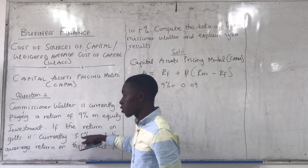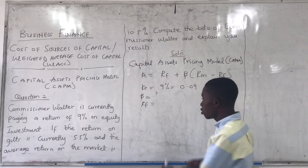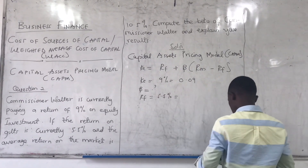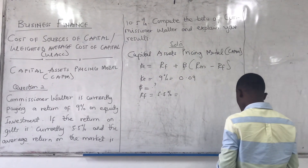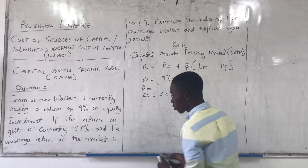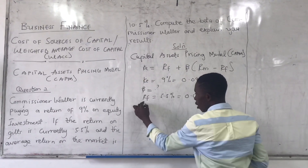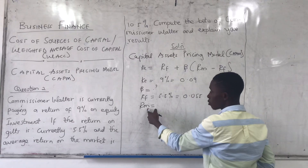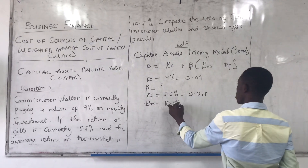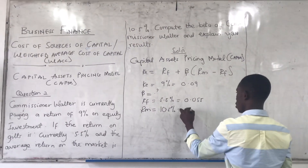The return on gilt is 5.5% — we know RF is the risk-free rate, either risk-free gilt or treasury bonds. So RF = 0.055. The average return on the market is 10.5%, so RM = 0.105.